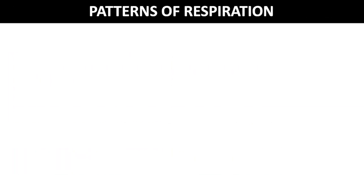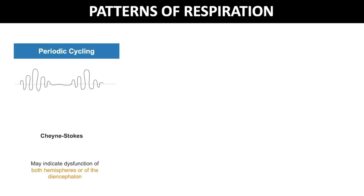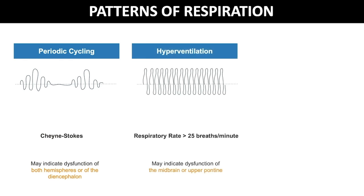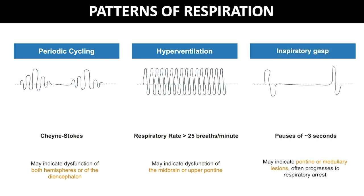Patterns of respiration may assist with localization. Periodic cycling, such as Cheyne-Stokes respiration, indicates dysfunction of both hemispheres or the diencephalon. Hyperventilation with respiratory rates greater than 25 breaths per minute may indicate midbrain or upper pontine damage. An inspiratory gasp with respiratory pauses of about 3 seconds after full inspiration suggests pontine or medullary lesions, and this type of breathing often progresses to respiratory arrest.